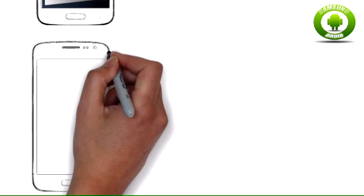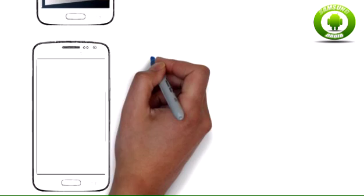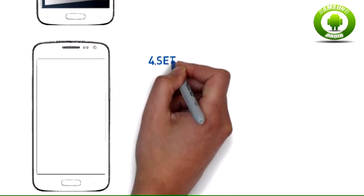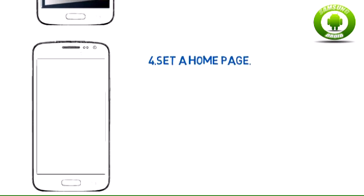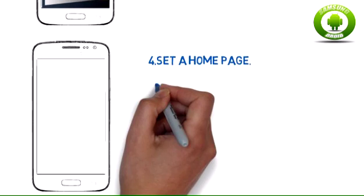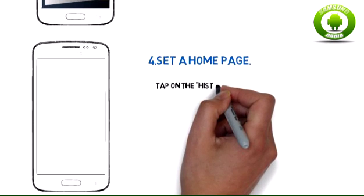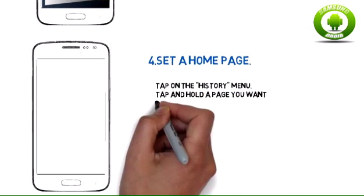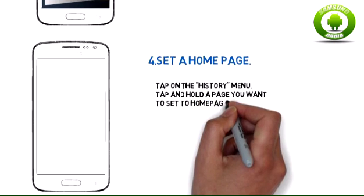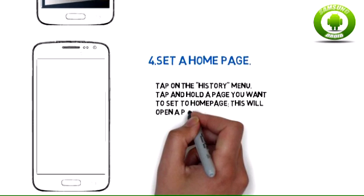Step 4: Set a home page. Tap on the history menu, then tap and hold the page you want to set as your home page. This will open a pop-up menu. Choose 'Set to home page'.